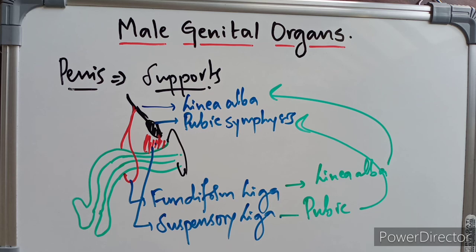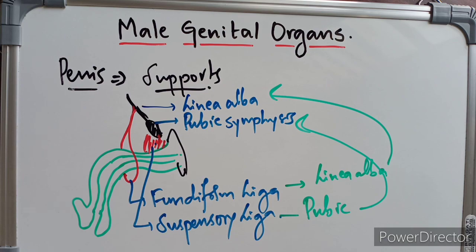Thank you guys. This is about the penis — external features and supports of the penis. In the next video we are going to discuss the arterial supply, venous drainage, lymphatics and nerve supply of the penis. If you like the video, make sure to subscribe and hit the like button, and please watch our other videos on the anatomy of the male genital organs. Thank you so much.